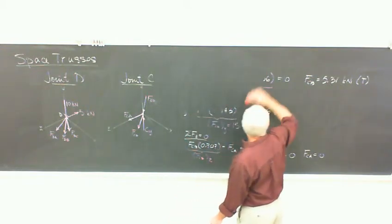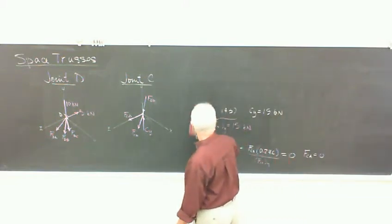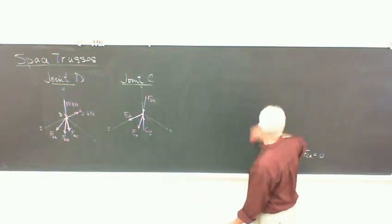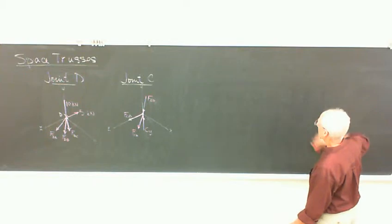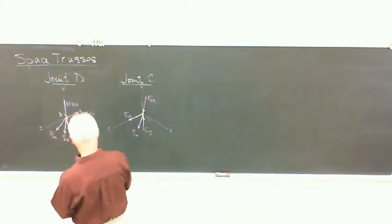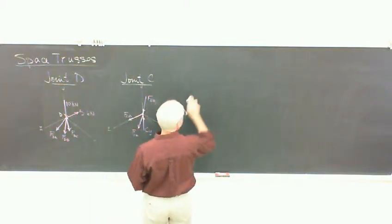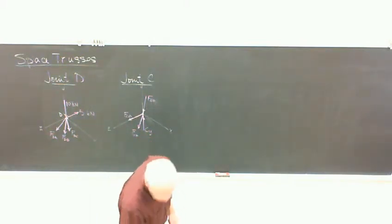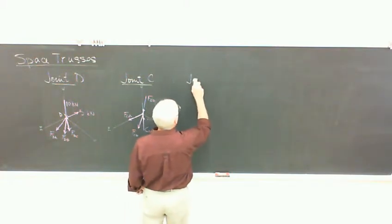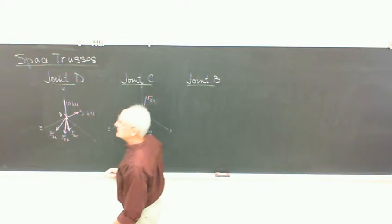All right, so I'll leave for you to check the rest of the results. I'll just give them and we can talk about what we're left with. We've started with this four-sided pyramid. We've already gotten rid of several of the members. So we still need to do joint B and joint A. We won't do the whole thing. We're running out of time. Joint B would be the next one. It's the one out in front here.